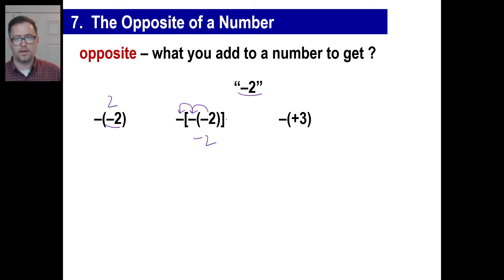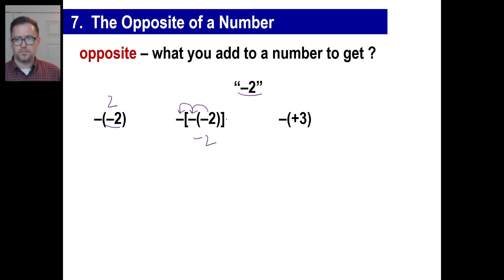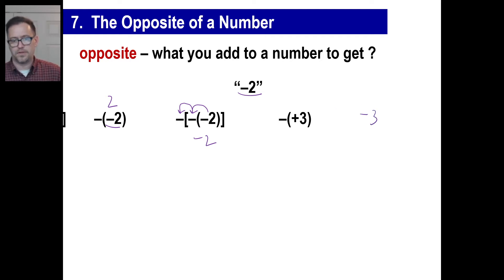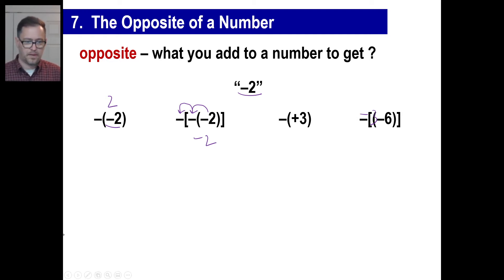Here it gets even better. What's the opposite of positive three? The opposite of positive three is just negative three — it's on the other side of the number line, piece of cake. How about this one? The opposite of the opposite of six.